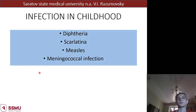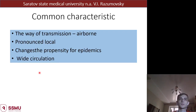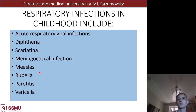Infections of childhood. Today we discuss diphtheria, scarlatina, measles, and meningococcal infection. Common characteristics of all of them are: airborne way of spreading, pronounced local changes, epidemic potential, and wide circulation. This group includes acute respiratory viral infections, diphtheria, scarlatina, meningococcal infection, measles, rubella, parotitis, and varicella.